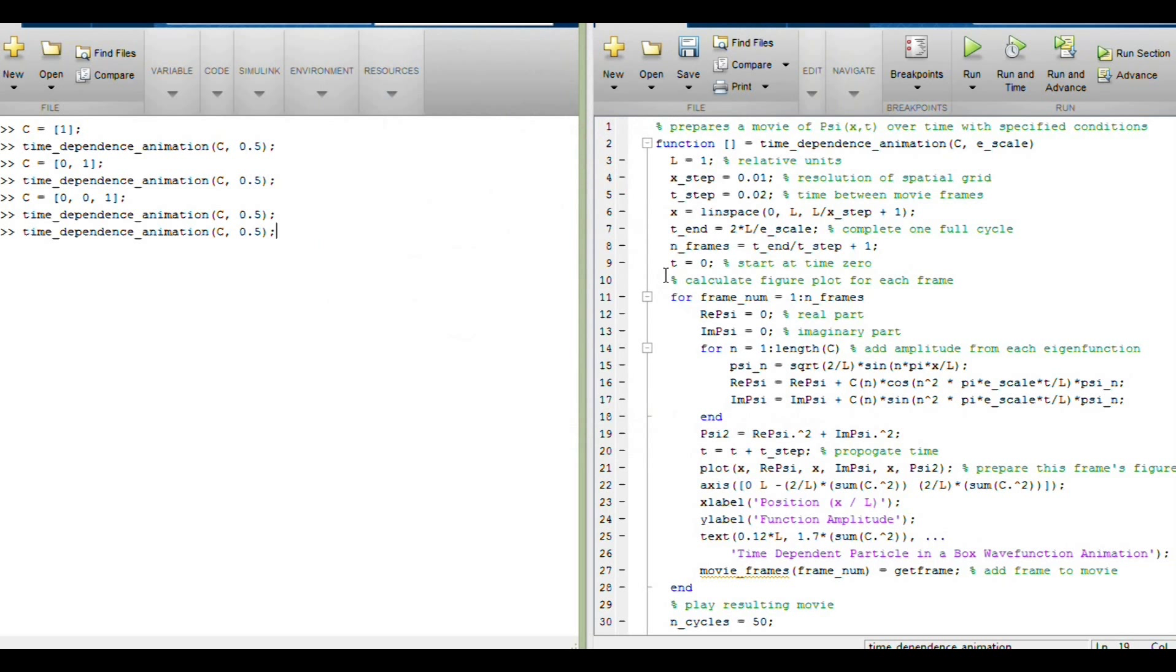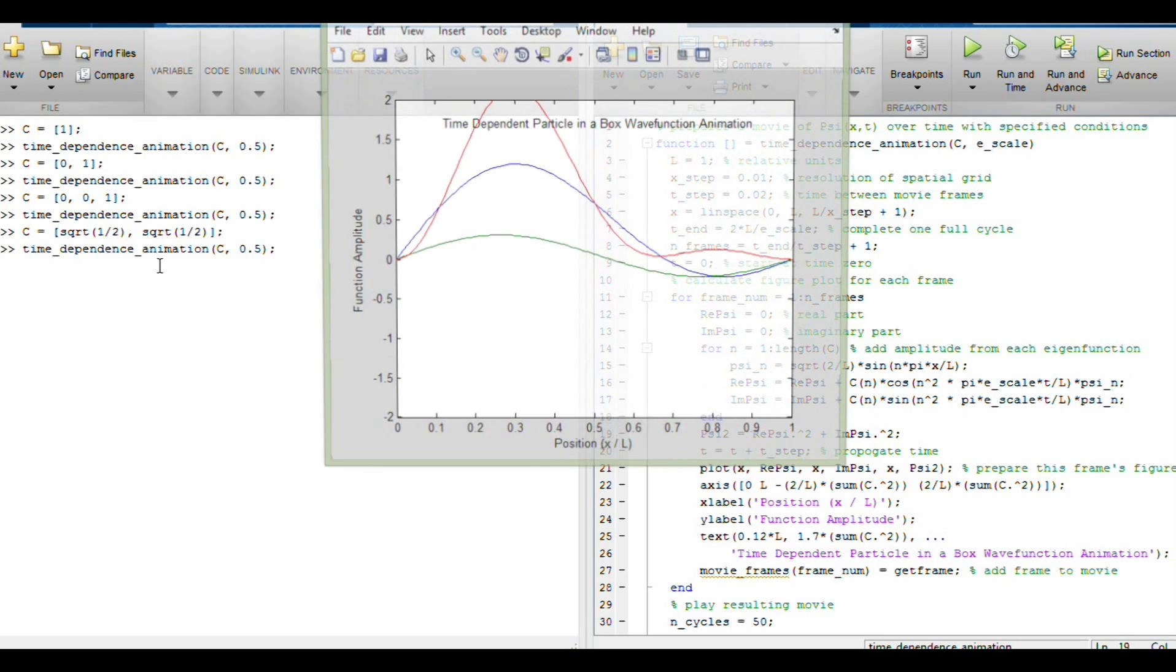So now let's look at some cases where the probability density does move in time. So let's say my coefficients are each the square root of 1 over 2. And I'm choosing this because I want the total wave function to be normalized. So the sum of each of these squared, square root of 1 over 2 squared plus square root of 1 over 2 squared equals 1. So the sum of these two is 1, so our total wave function is going to be normalized. So the probability of finding the particle somewhere is still going to be 1.